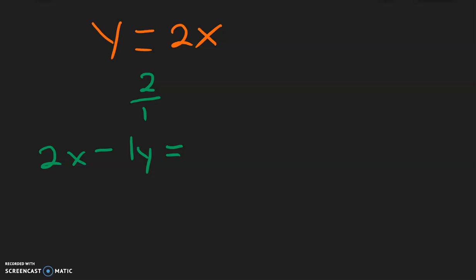And then the y-intercept, we have nothing here, so the y-intercept is just going to be 0, so 0, 0, we can plug in 0s. So we have 2 times 0 minus 1 times 0, well 2 times 0 is 0, negative 1 times 0 is also 0. 0 plus 0 is going to be a 0.